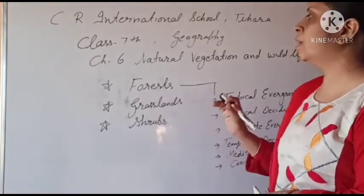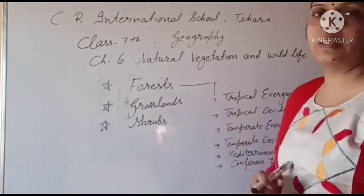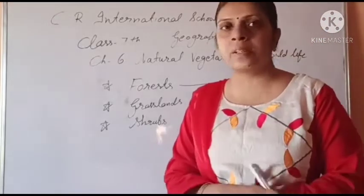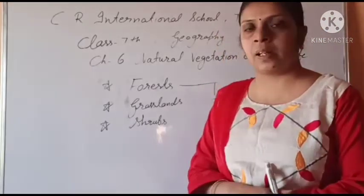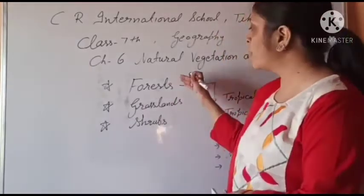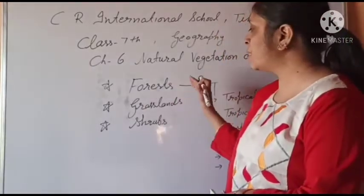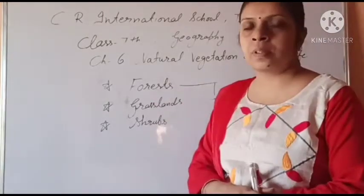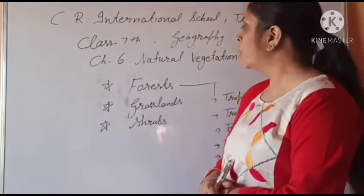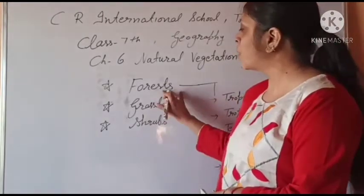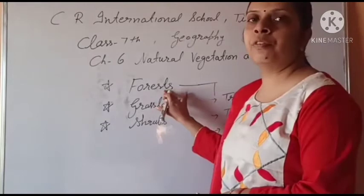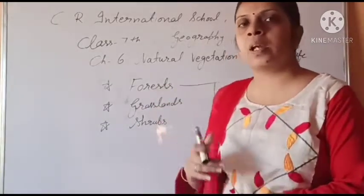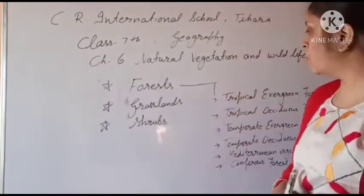We have talked about Natural Vegetation in three broad categories: first is Forest, second is Grassland, and third is Shrubs. Now we will talk about Forests. Forests can be divided into several types.